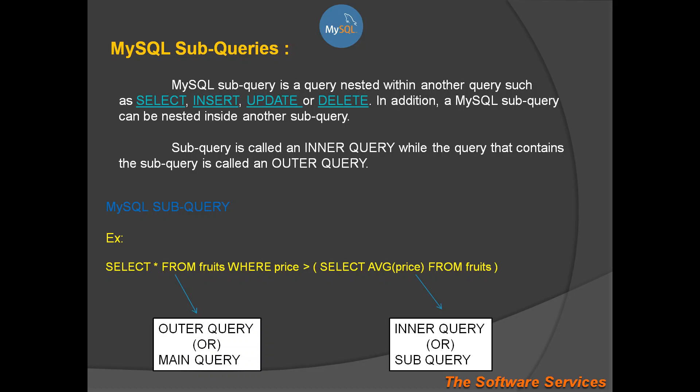In a loop, there is a loop. In a conditional statement, there is a parenthesis, and inside the parenthesis there is another conditional statement — that is called nested. Similarly, in the database, what we call subqueries: in a query, there is a nested query.